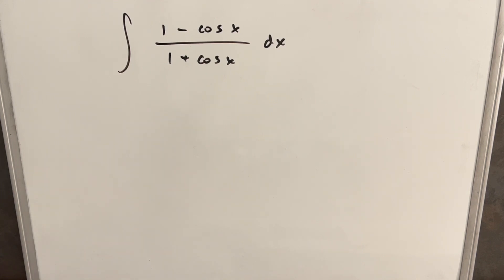Hey, I've got here today an interesting integral. We have the integral of 1 minus cos x over 1 plus cos x dx. I thought it would be interesting to solve this using two different methods and seeing how the solutions compare, so let's get started with method 1.